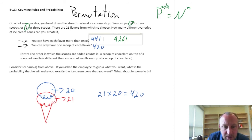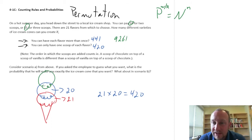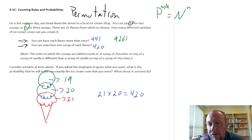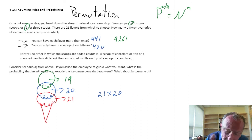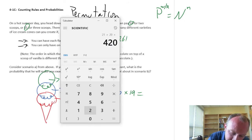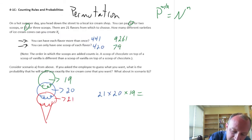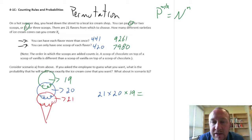If I pick a third flavor — I have this nice big tall ice cream — if I've already picked vanilla and chocolate, those two options no longer exist for that third scoop. So now I'm reduced to having only 19 options available for that third scoop. So the total number of varieties of ice cream cones is 21 times 20 times 19, which equals 7,980 different varieties of ice cream cone if I can't use the same flavor more than once.